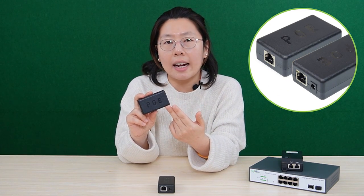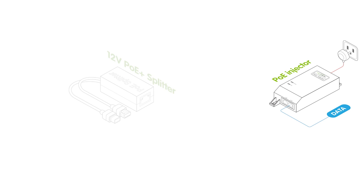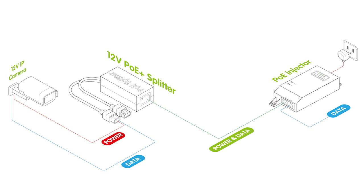Our next device is the PoE splitter. If you want to connect a non-PoE device to a PoE injector or PoE switch, you won't get any power. In that case, you need to add a PoE splitter at the other end of the cable. The PoE splitter will complete the power handshaking with the PoE injector or switch, and at the same time it will separate the power from the data so you can supply the non-PoE device.